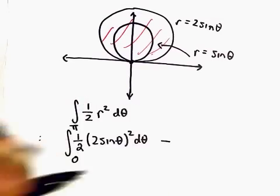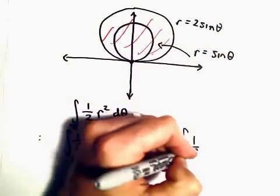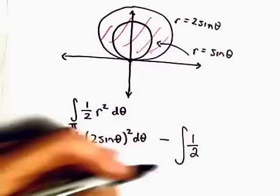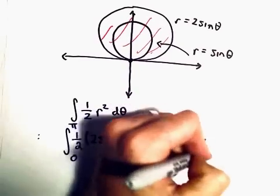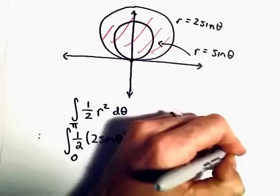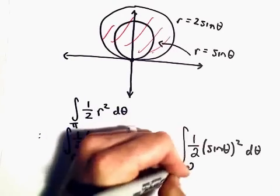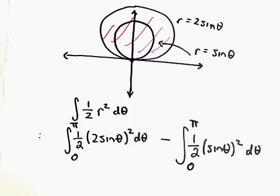And then we could subtract away the area of the inside circle, which we could compute by doing 1 half. And in this case, we would just use sine theta quantity squared d theta, again, from 0 to pi. So that will be the setup.